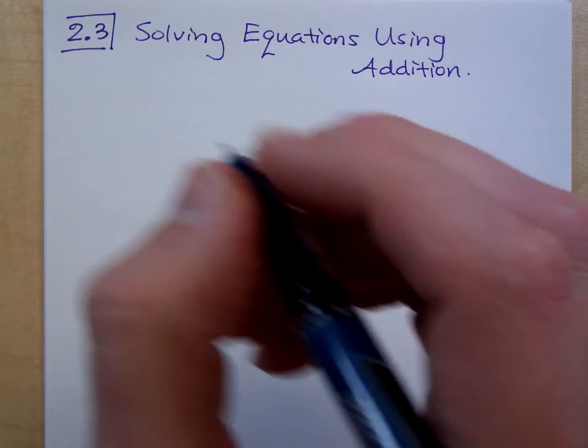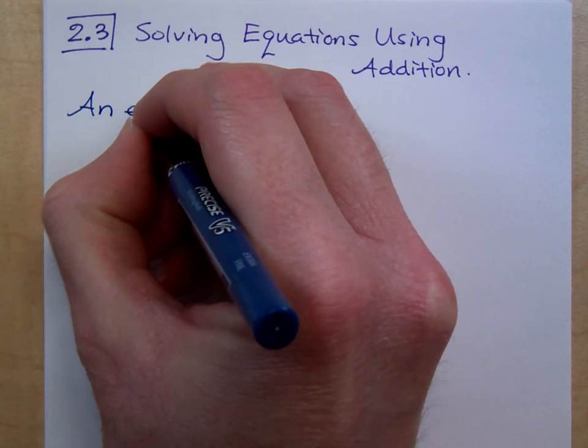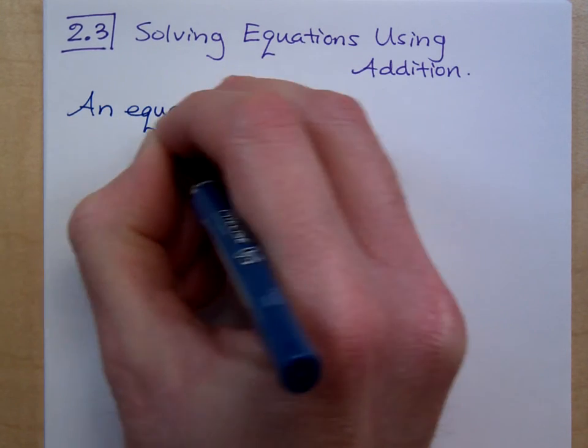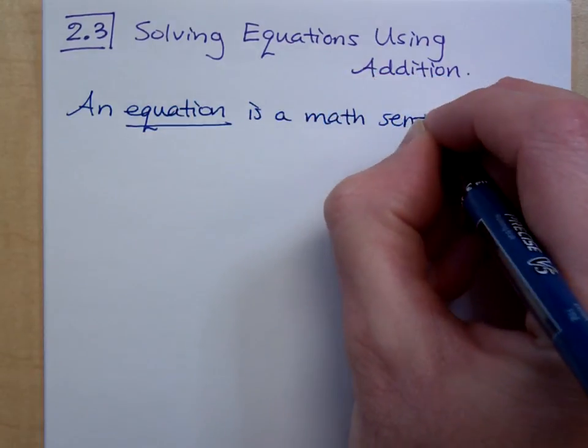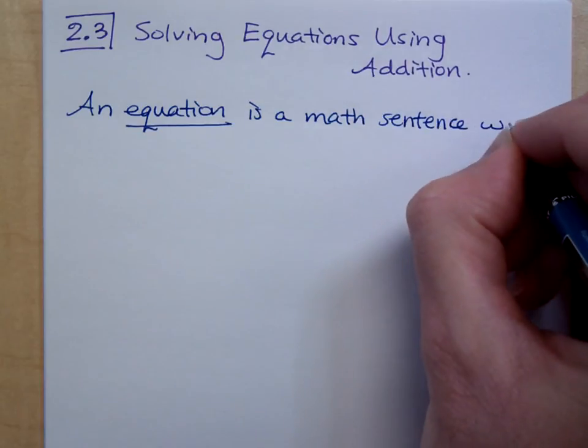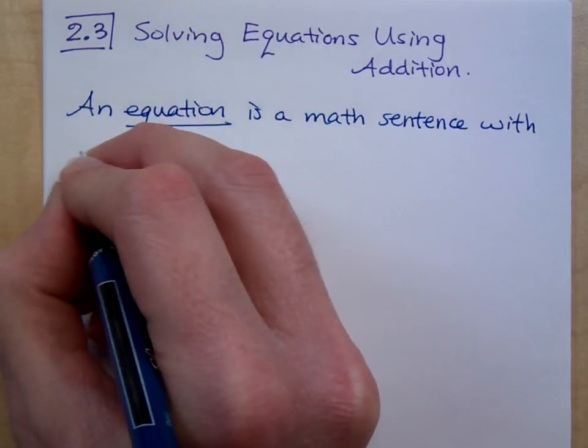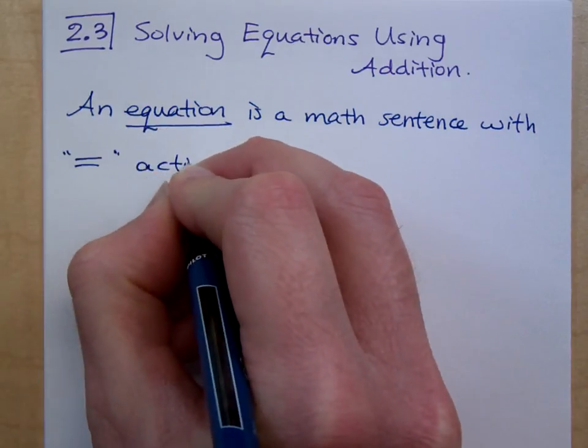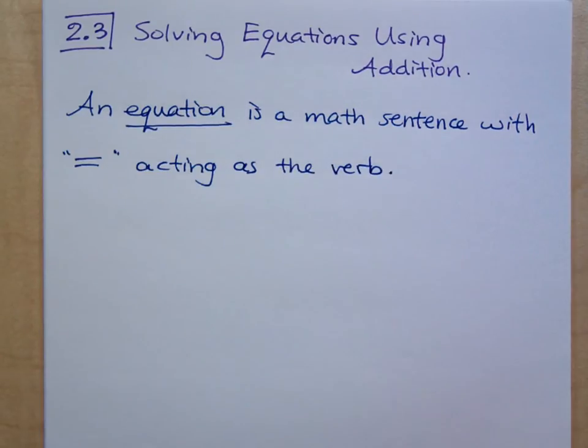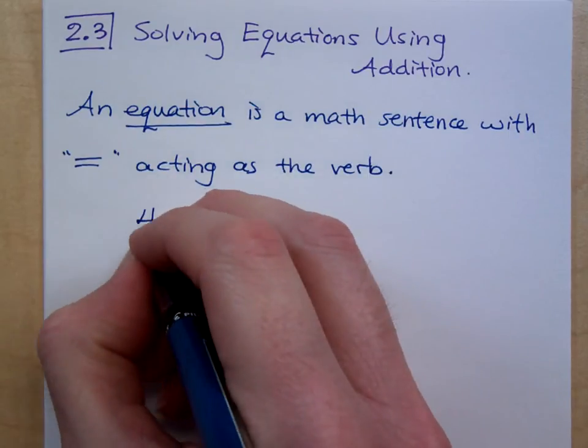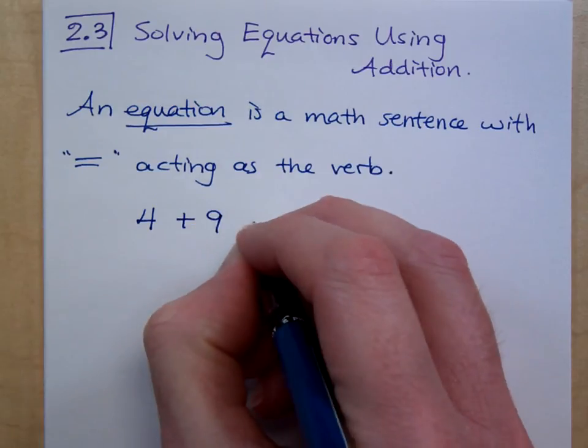And this is how I like to define an equation. An equation is a math sentence with the equal sign acting as the verb. Now, just like with any sentence that we come across, or most sentences, sentences can be true or false. For example, if I say 4 plus 9 equals 13.